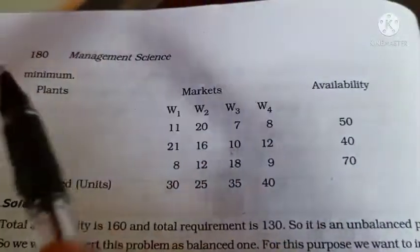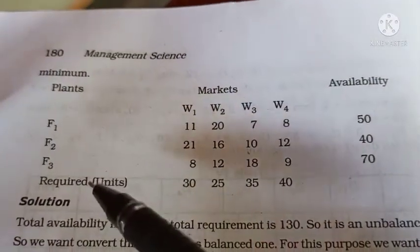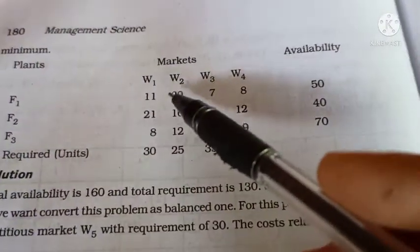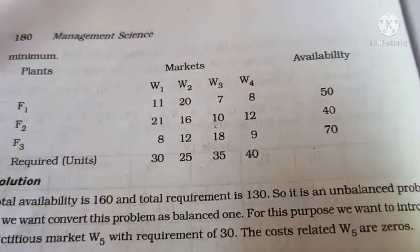So this is your question. We have three plants F1, F2, F3, and four markets W1, W2, W3, W4.